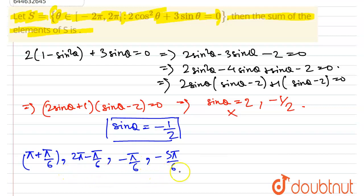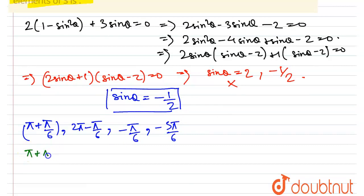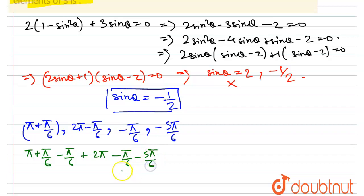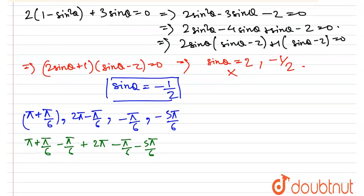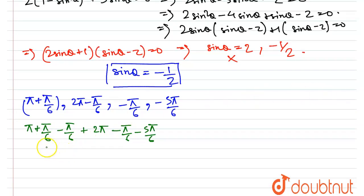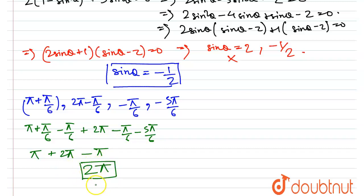So these are the four values of theta belonging to S. Now we find their sum: (π + π/6) + (2π − π/6) + (−π/6) + (−5π/6). The π/6 and −π/6 terms cancel. We're left with π + 2π − 6π/6, which is π + 2π − π = 2π. So the sum of the elements of S is 2π.